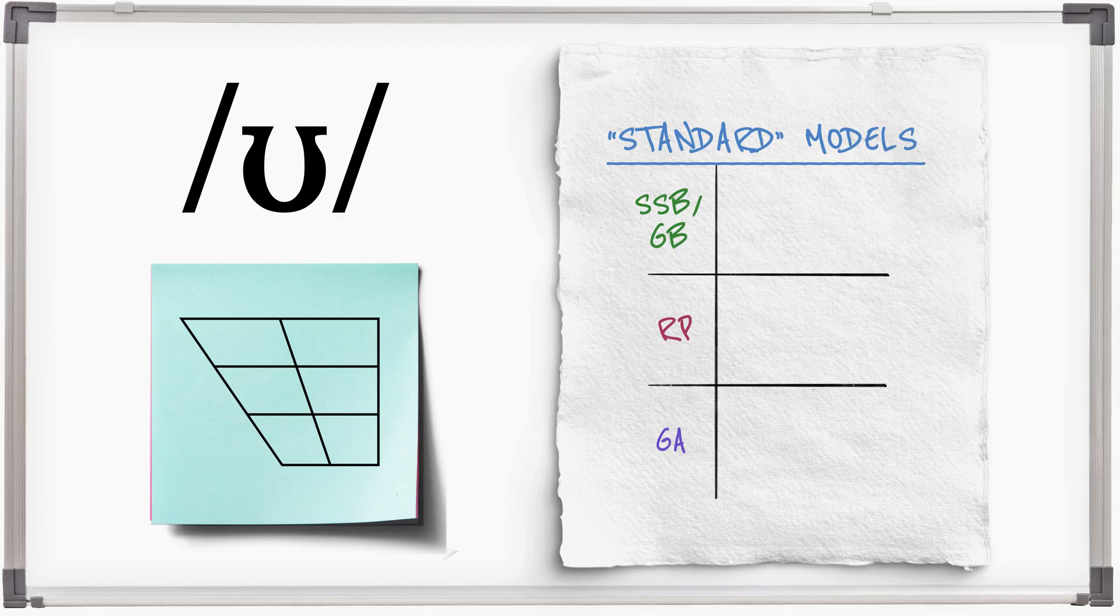In GB the sound is very close to central unrounded. U. Good look. Except before dark L when it is further back, U, and rounding is more likely.